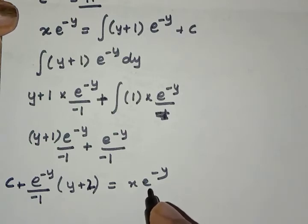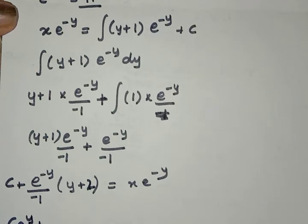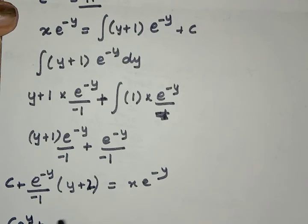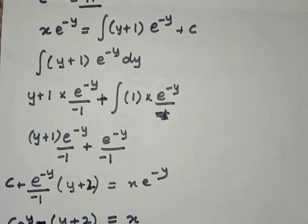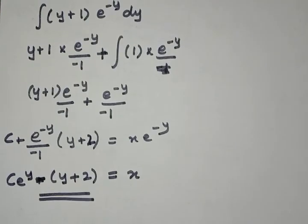Now, if we divide both sides by e raised to minus y, we get x equals minus(y plus 2) plus c times e raised to y. So this is our final answer for the solution.